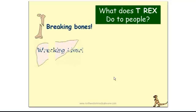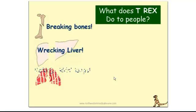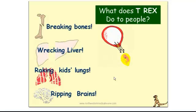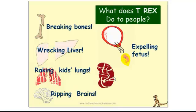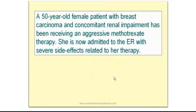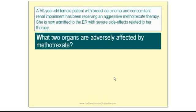So what does T-Rex do to people? It breaks the bones and suppresses the bone marrow, wrecks the liver, rakes the children's lungs, rips the brain, aborts the fetus, and tears the kidneys. A 50-year-old female patient with breast carcinoma and renal impairment has been receiving aggressive methotrexate therapy and is now admitted to the hospital with severe side effects. From reading the case scenario, you would infer that T-Rex is indicated for the treatment of breast cancer.